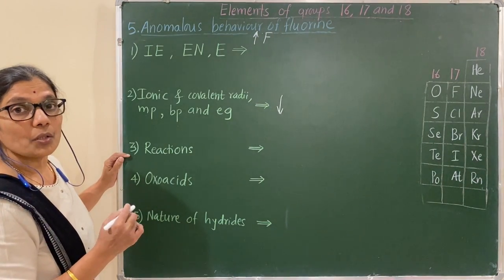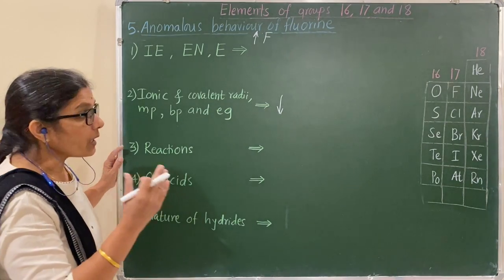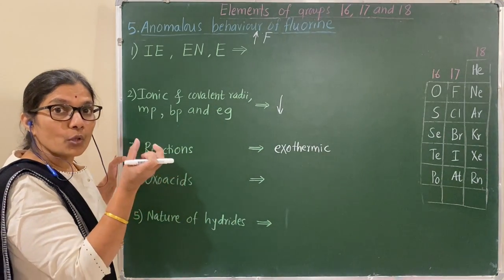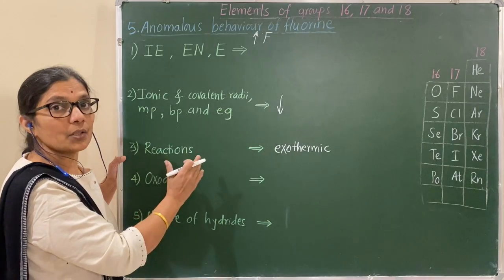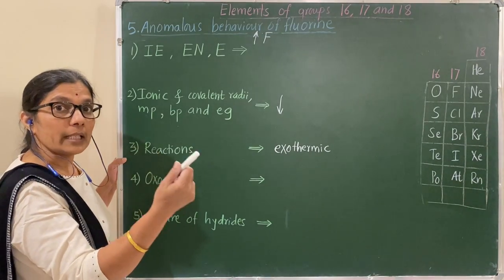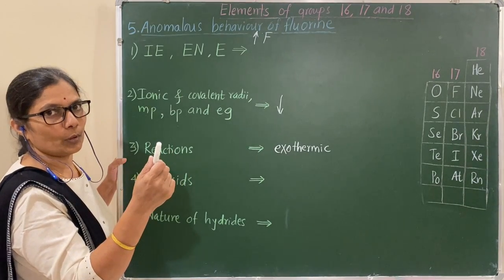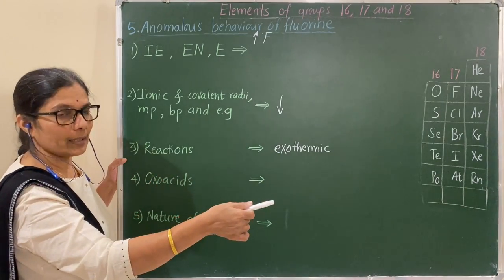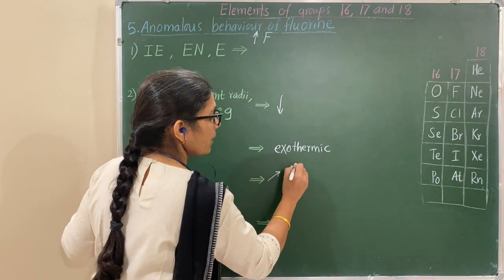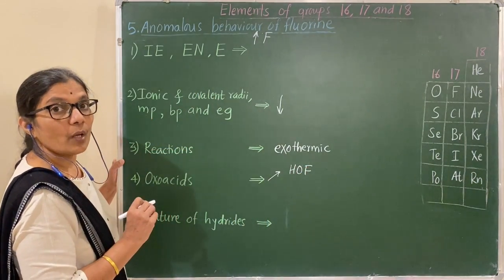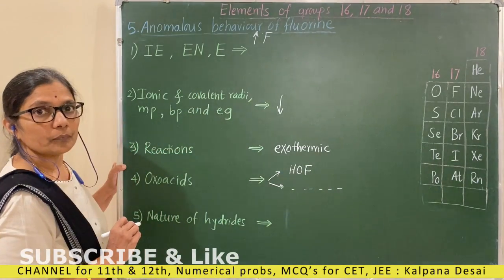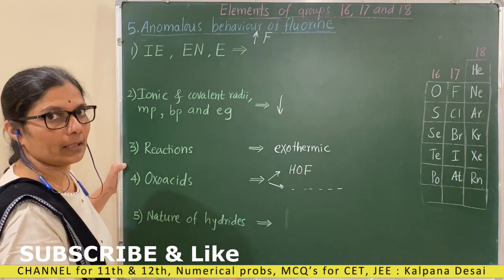Next, reactions of fluorine: most of the reactions of fluorine are exothermic, meaning heat is evolved during the reaction. This is because fluorine forms short and strong bonds with other elements. Next, oxyacids: fluorine forms only one oxyacid — HOF, hypofluorous acid — while the other halogens like chlorine, bromine, and iodine form a large number of oxyacids such as hypohalous, halous, halic, and perhalic acids.